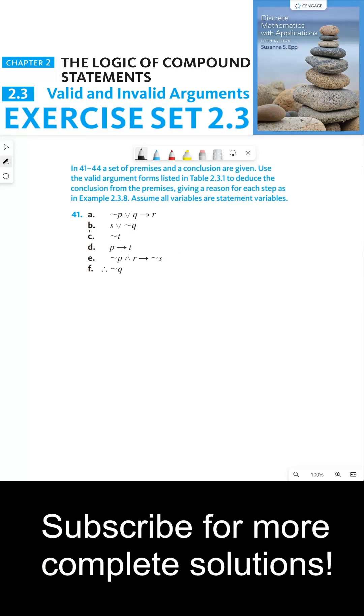So instead we'll start with part b and part c. Part c is the simplest one to work with. Because not t is true, this means that t must be false. And since t is false, we can now go to part d.